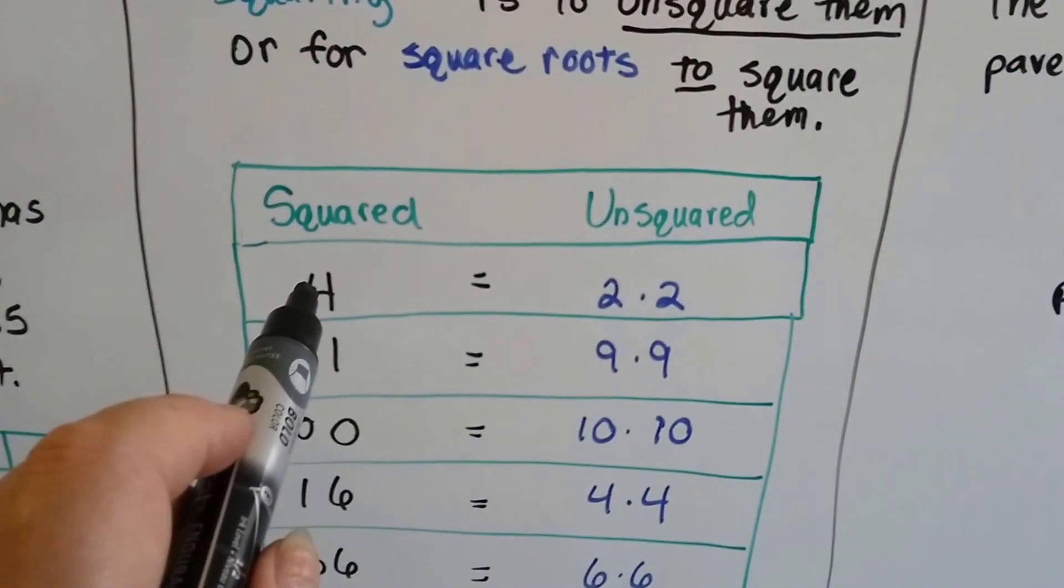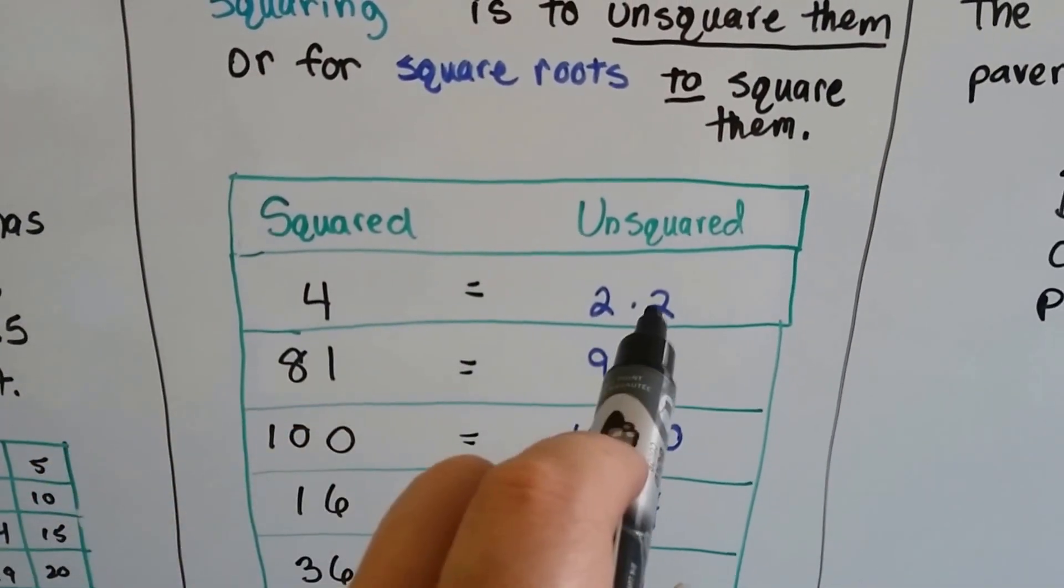So if you had a 4 and you wanted to do an inverse operation, you could do 2 times 2.